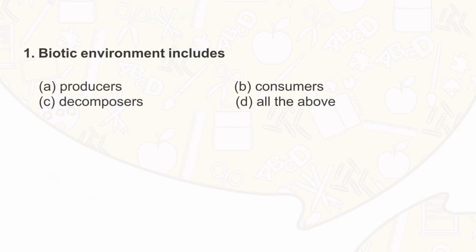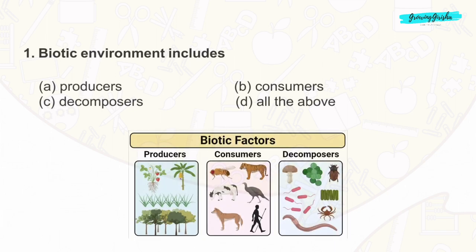Level 1, Question 1: The biotic environment refers to the living organisms or biological factors in a particular ecosystem or habitat, including producers, consumers, and decomposers. The correct answer is option D: all of the above.